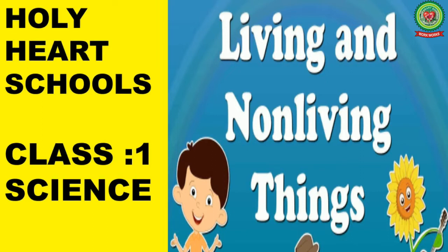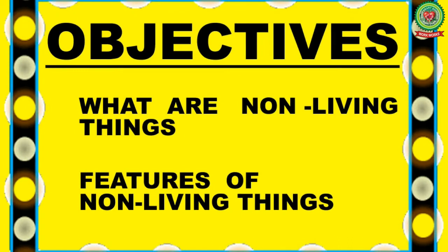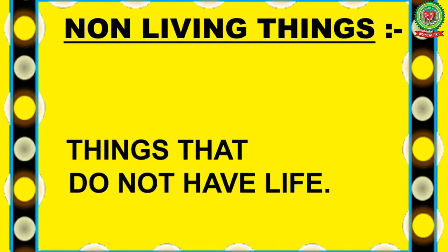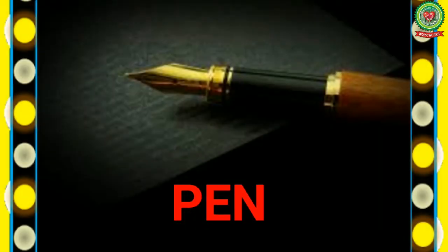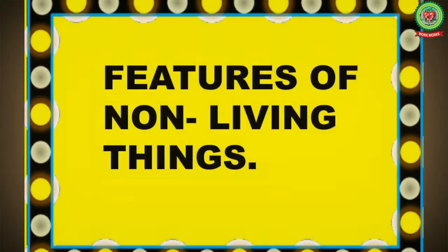I hope you have all learned the meaning and features of living things. Today we will learn about non-living things. The objective of today's learning is: what are non-living things and what are their features? Non-living things means things that do not have life. Examples: pen, chairs, table — they don't have life, so they are non-living things.